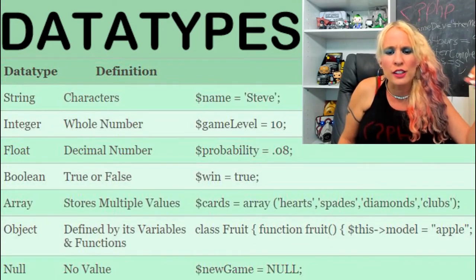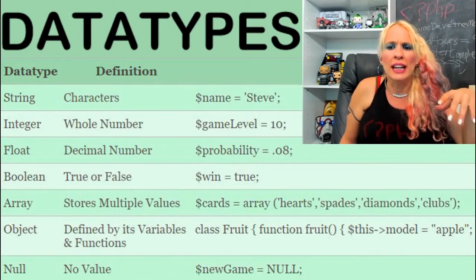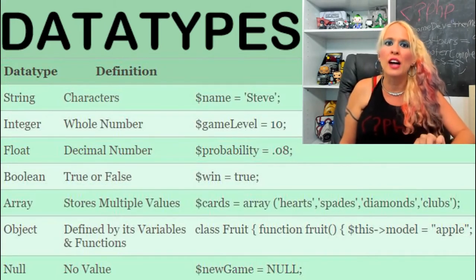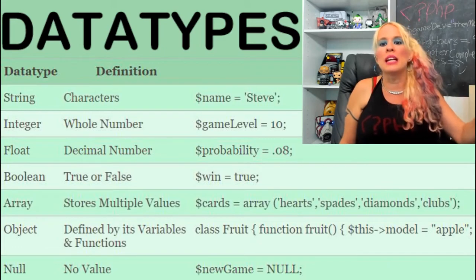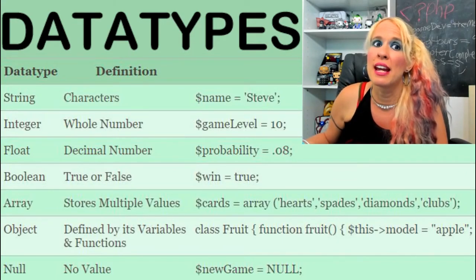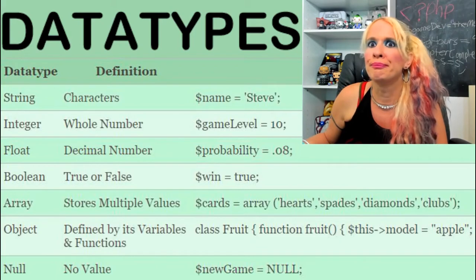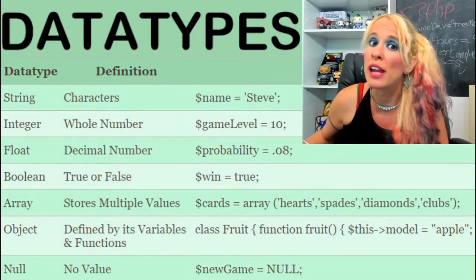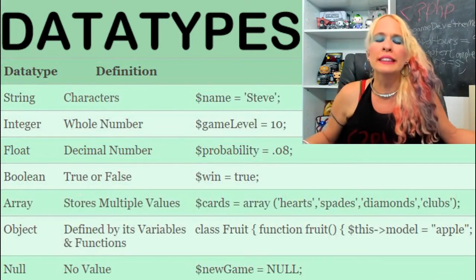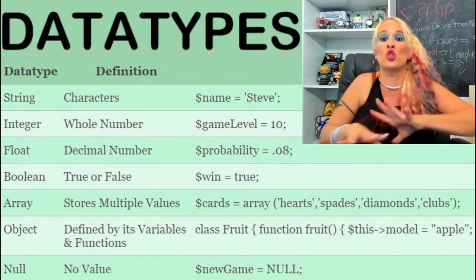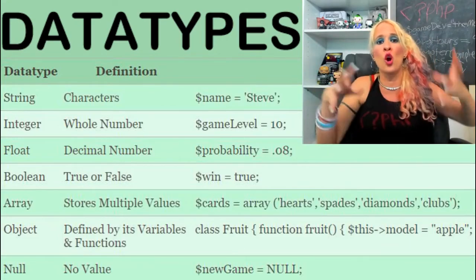Objects are defined by their variables and functions — you'll be able to make classes. My example is class fruit. Null means no value. It's not the same as zero — zero is a value. Null is empty, completely empty. Think about it like this: if I texted my friend asking how many jelly beans she has and she said zero, I got a value. But if she never responded, that's null — there's no data, I don't know what she has.